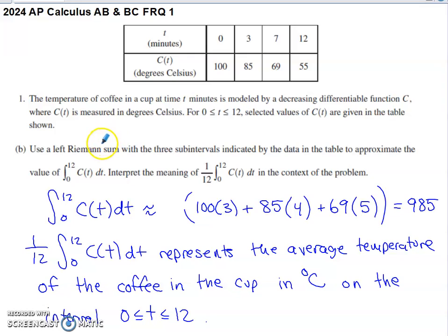Part B asks us to use a left Riemann sum with three subintervals indicated by the data in the table to approximate the value of this definite integral. The value can be approximated by recognizing that the width of our first rectangle is going to be 3 units, then our second rectangle 4 units, and our final rectangle 5 units. The left endpoints of each of these subintervals would be 100, 85, and 69. 55 is not going to be used in the calculation. That's only the right endpoint of the final subinterval.